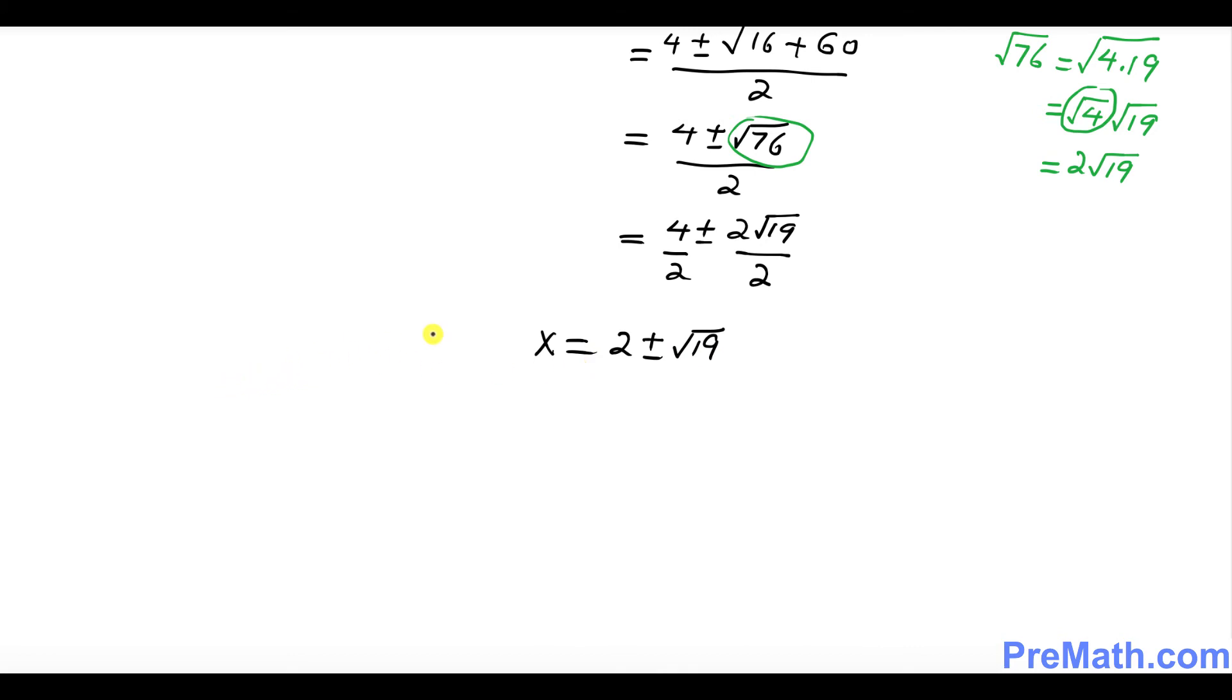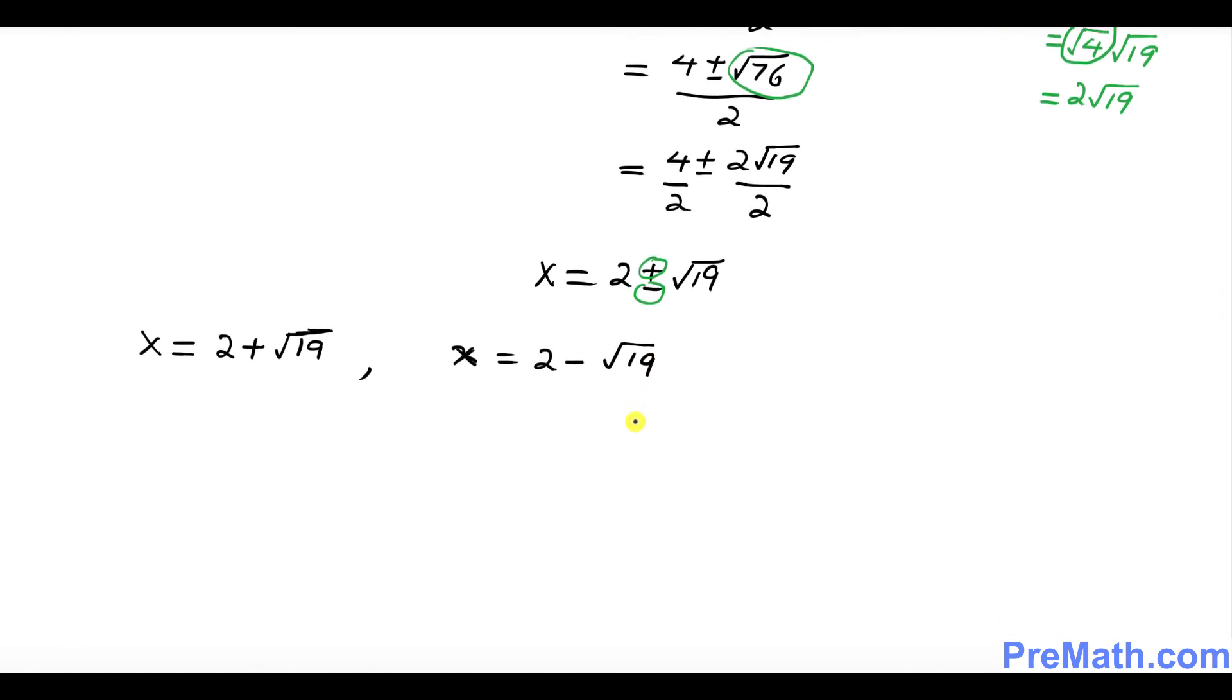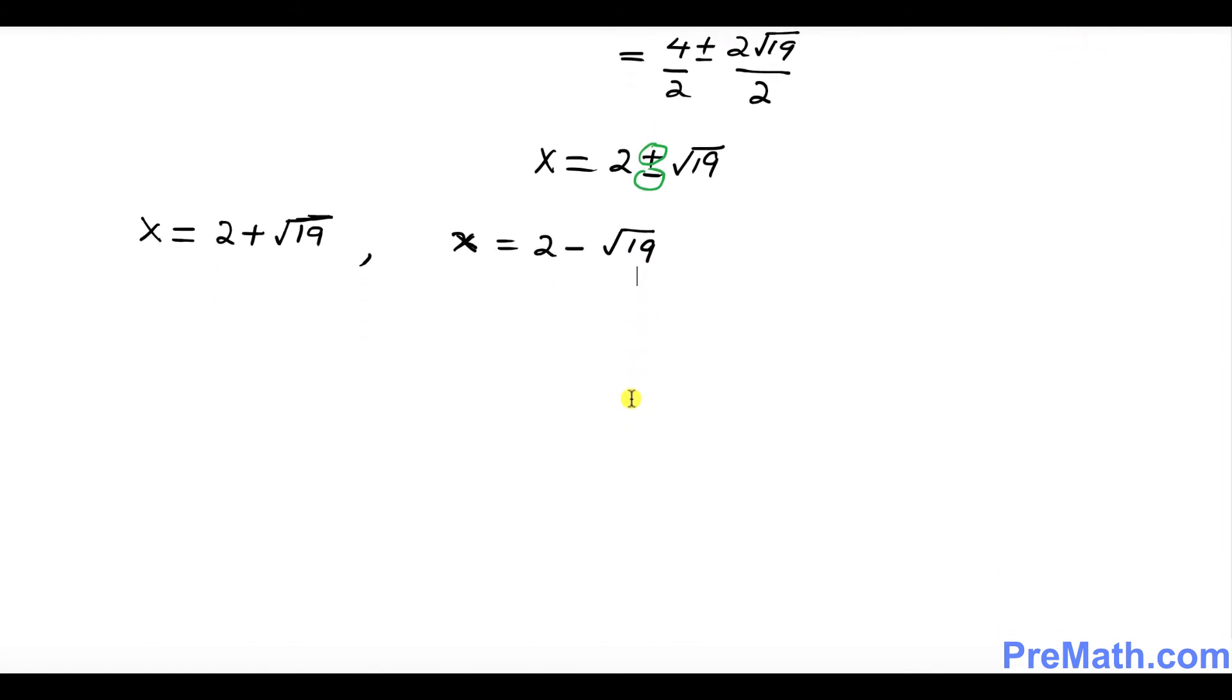So thus our positive and negative sign. So this could be written as one of the solutions is going to be x equal to 2 plus square root of 19. The other solution is going to be x equal to 2 minus square root of 19. And here is our complete solution set: 2 plus square root of 19 and 2 minus square root of 19.